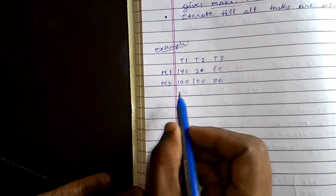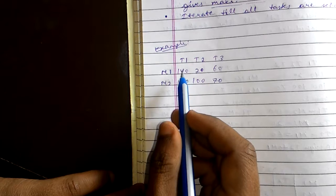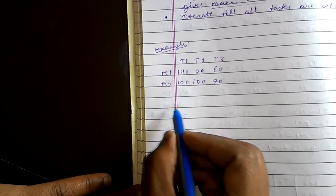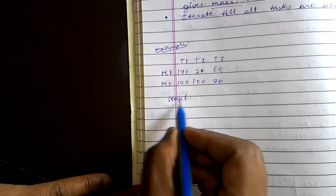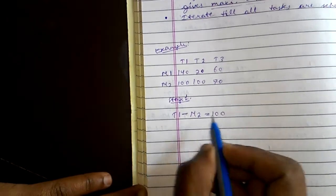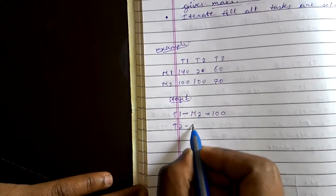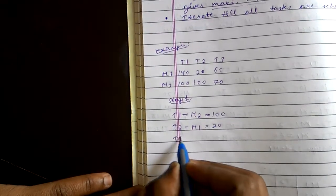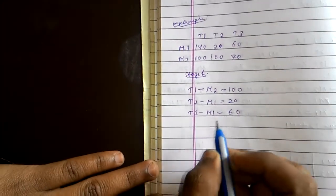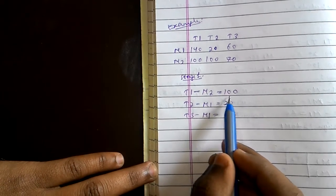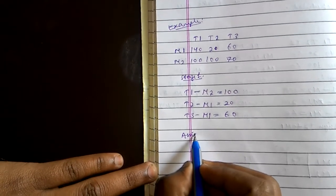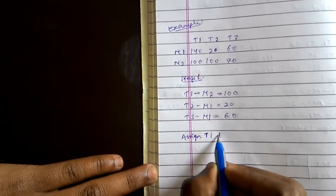We can see that the first step I have told you is we have to find the minimum completion time. So minimum completion time for each task: t1 goes to m2 that is 100, t2 goes to m1 that is 20, t3 goes to m1 that is 60. Now since we have to allot the maximum completion time that is 100, we will assign t1 to m2.